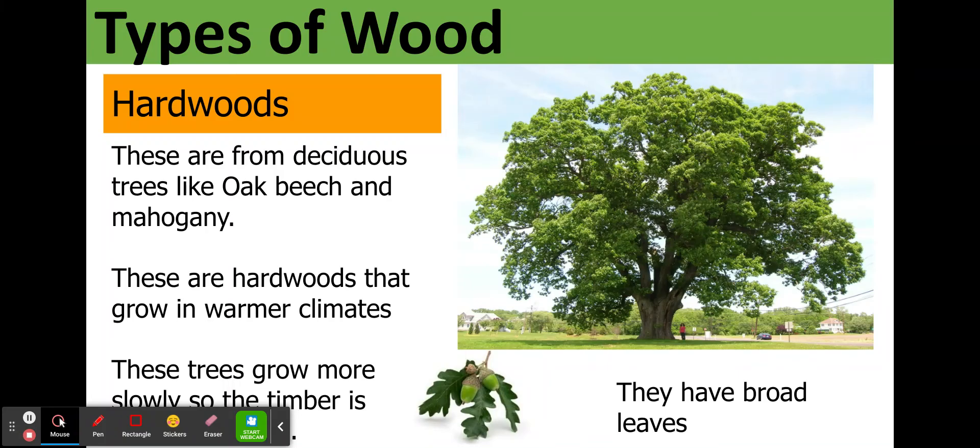Types of wood. Hardwoods are from deciduous trees like oak, beech, and mahogany. These are hardwoods that generally grow in warmer climates. These trees grow more slowly so the timber is more expensive. They have broad leaves and this characteristic shape.